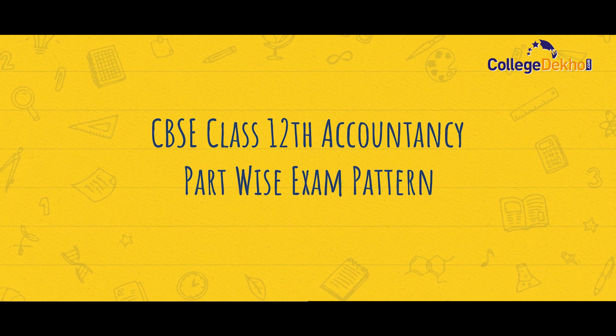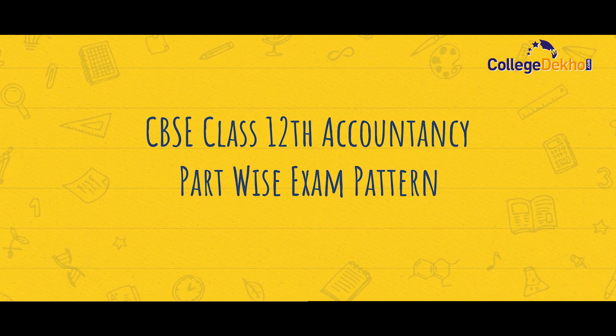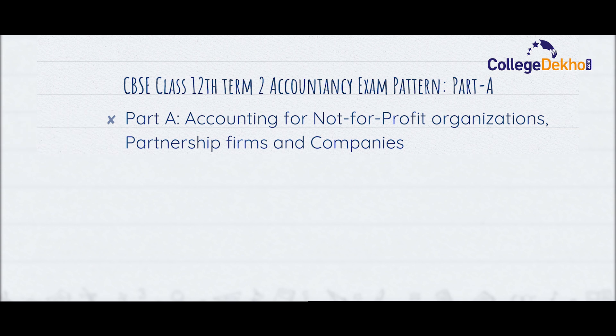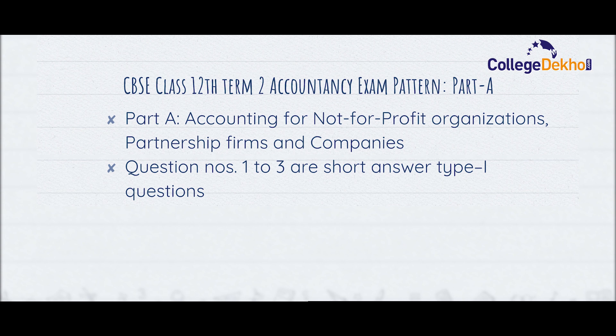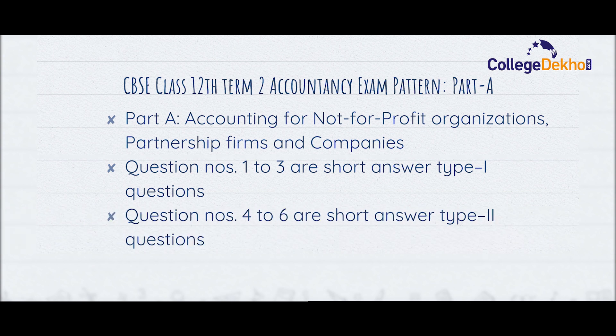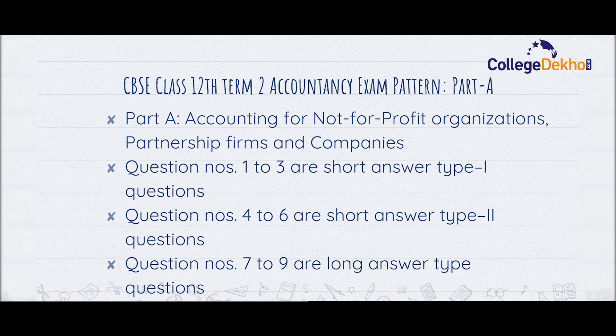Now, let us look at the CBSE Class 12th Accountancy part-wise exam pattern. First, let us look at the exam pattern for Part A. The Part A section for the Class 12th Accountancy exam will cover accounting for not-for-profit organizations, partnership firms, and companies. Question numbers 1 to 3 will be Short Answer Type 1 questions, question numbers 4 to 6 will be Short Answer Type 2 questions, and question numbers 7 to 9 will be Long Answer Type questions.